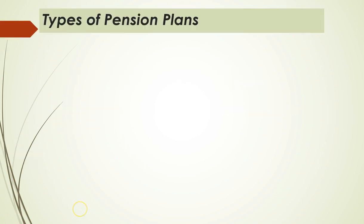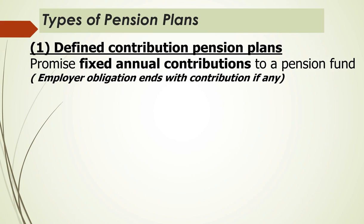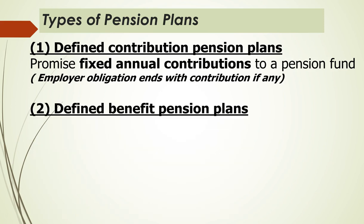There are two types of pension plans. Most companies have gone to defined contribution pension plans — they promise fixed annual contributions to the pension fund, but once they make that contribution their obligation is gone. The kind they used to have, which required people to stay at the same company for a long period of time, is called a defined benefit plan. Most schools and government agencies still have defined benefit pension plans, where you stay, retire, have enough years of service, and then receive a fixed amount for the rest of your life.